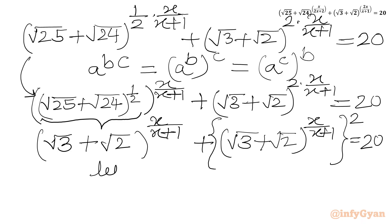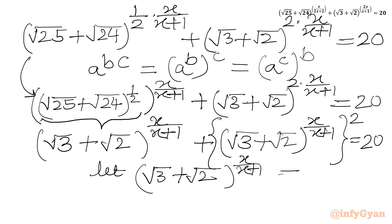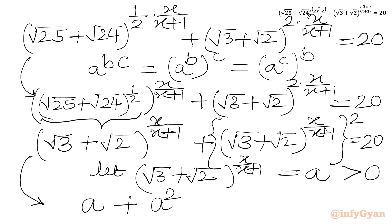Now our substitution is clear. Let us say root 3 plus root 2, whole power x over x+1, equal to a. So for real x, a must be greater than 0 — a cannot be 0, a cannot be negative. So our equation will become a plus a squared equal to 20.